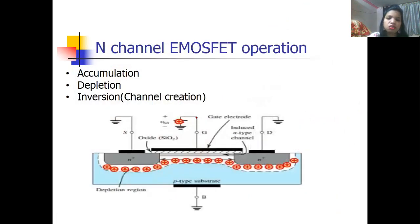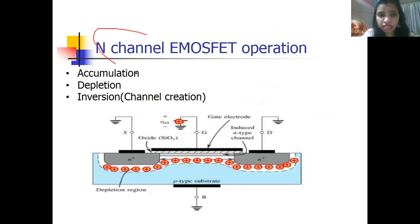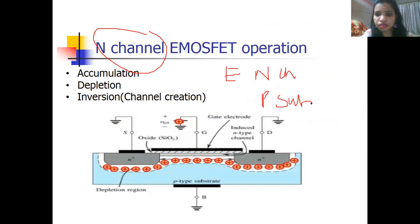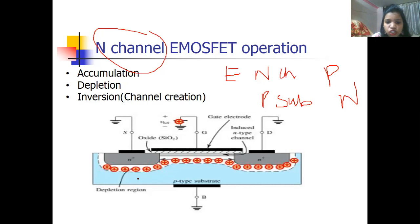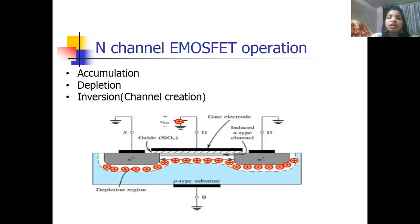For eMOSFET operation, we take the N channel MOSFET. Remember: if the channel is N type, then the substrate will be P type. For N channel eMOSFET, there is an N channel with a P substrate. For P type MOSFET, the channel would be P and the substrate would be N. The working of eMOSFET can be understood in three modes: accumulation mode, depletion mode, and inversion mode.